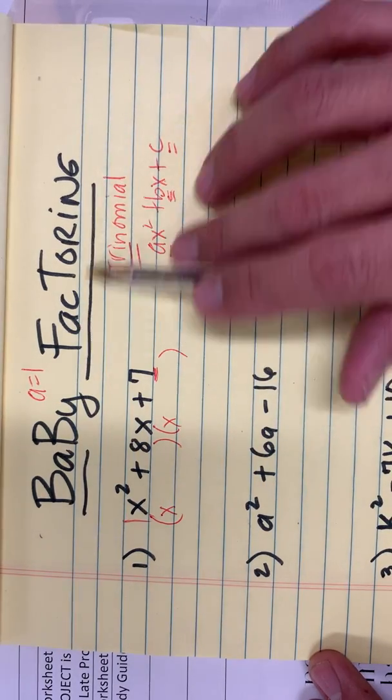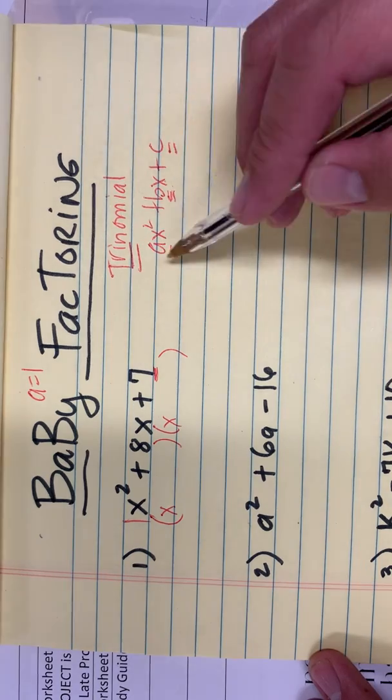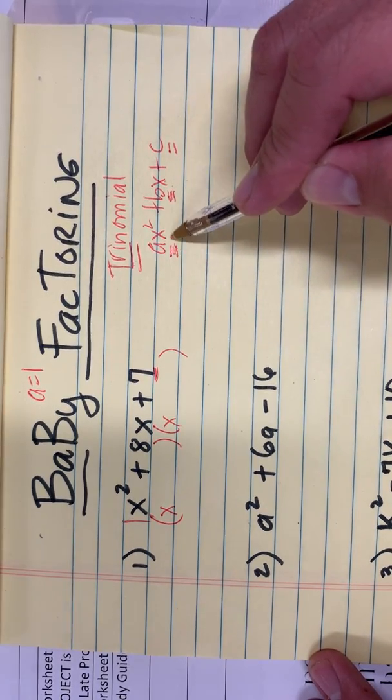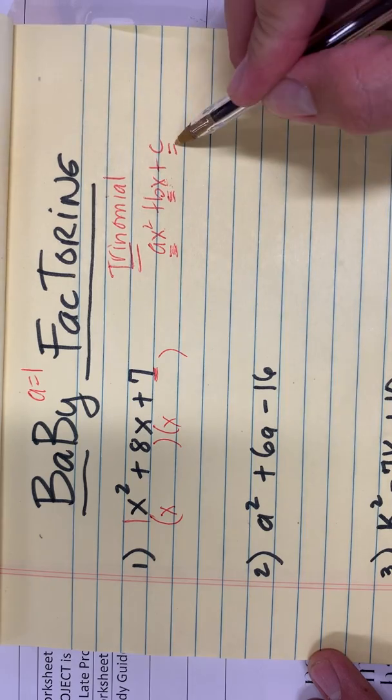When you say trinomial or factoring trinomial, we have three terms: AX squared plus BX plus C, wherein A is the leading coefficient, the number beside X squared, BX is the middle term which has just the X, and C is the constant.